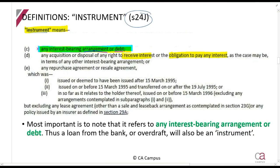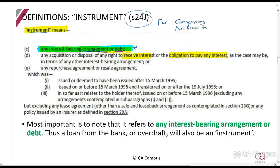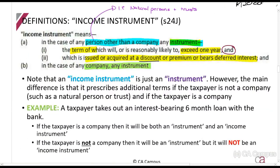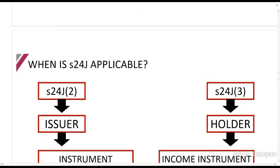Let's take the two definitions together. An instrument — for natural persons, trusts, and companies — is anything that has interest on it. But an income instrument, if you're a natural person or a trust, must be for more than one year and must have been issued at a discount or a premium. For a company, any instrument is also an income instrument. This distinction is very, very important to see clearly.